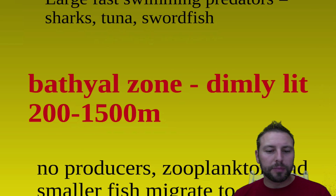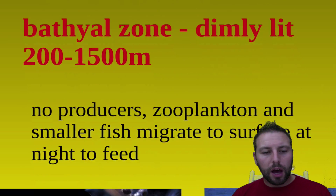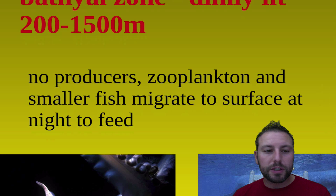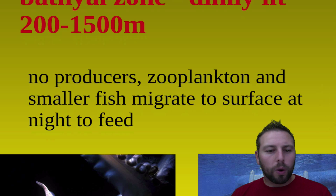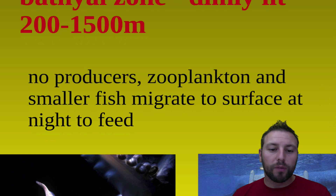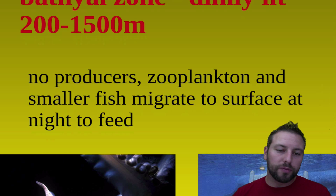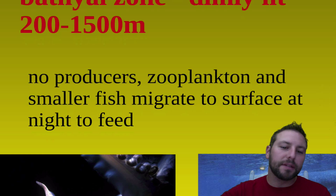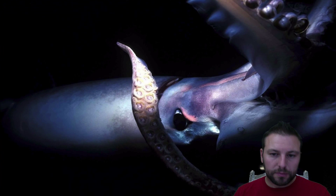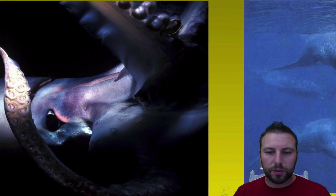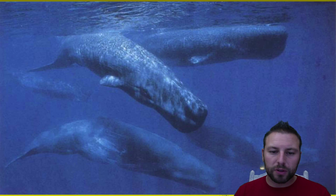The bathyal zone is dimly lit with no producers. Zooplankton and small fish will migrate from the bathyal zone up into the euphotic zone at the top. They do this daily migration to avoid predation — they'll migrate to the surface at night to feed when they're less visible. We also see squid and whales that travel between the zones.